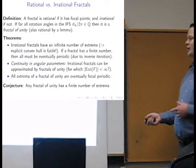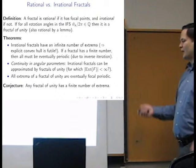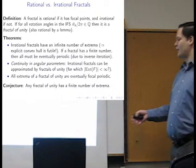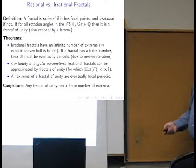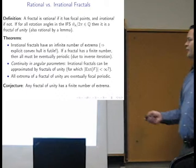And then we have continuity in angular parameters. So that's another theorem. So meaning we can just design a fractal of unity and approximate the convex hull of even irrational fractals, right? And then we have this indicating lemma or theorem that, a fractal of unity actually has eventually focal extremal points. So that kind of indicates that the number of extrema should be finite, but that's only a conjecture. So we haven't been able to prove that. It seems kind of difficult, but I have partial ideas and results.